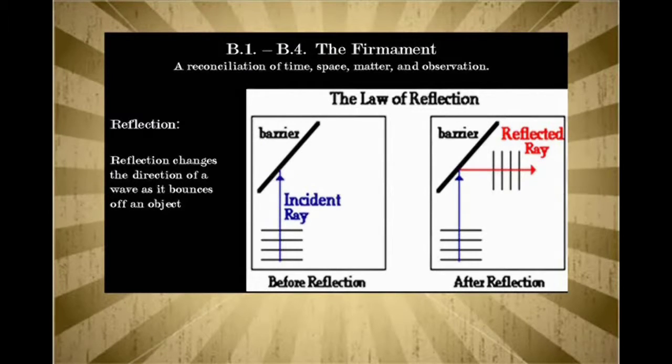Reflection, refraction, diffraction. Reflection changes the direction of a wave as it bounces off an object. As you can see in the example there, you've got an incident ray and then you've got a reflective ray. So the original ray comes in, hits the barrier, and goes a different direction.